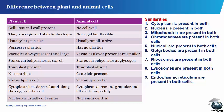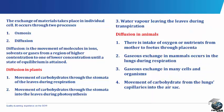The exchange of materials takes place in individual cells through two processes: osmosis and diffusion. Diffusion is the movement of molecules, ions, solvents or gases from a region of higher concentration to one of lower concentration until a state of equilibrium is attained. Diffusion in plants includes: movement of carbon dioxide through the stomata of the leaves during respiration; movement of carbon dioxide through the stomata into the leaves during photosynthesis; and water vapor leaving the leaves during transpiration.